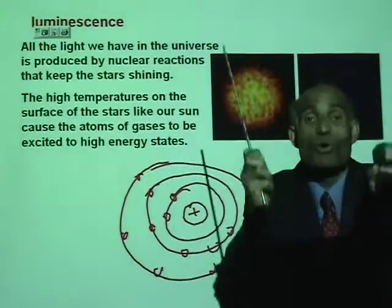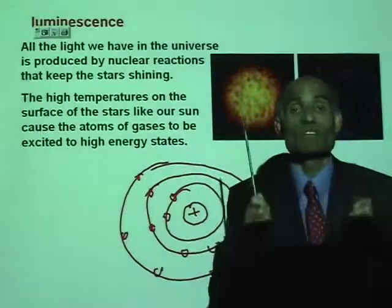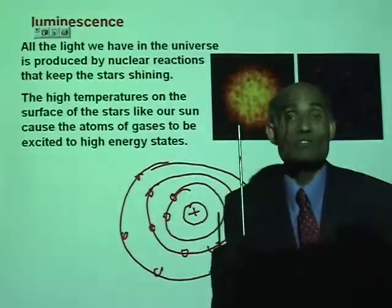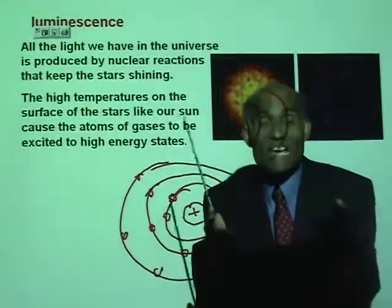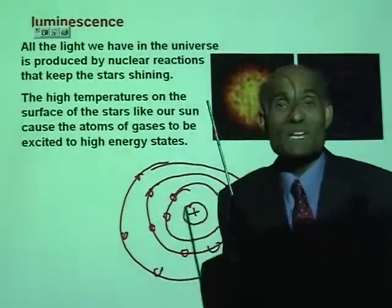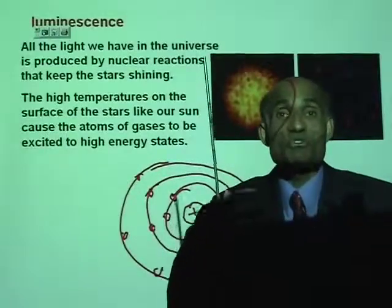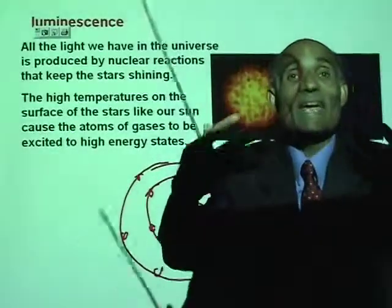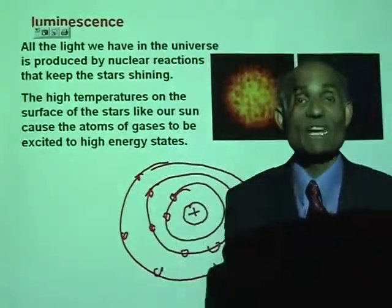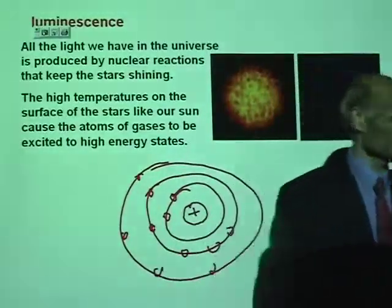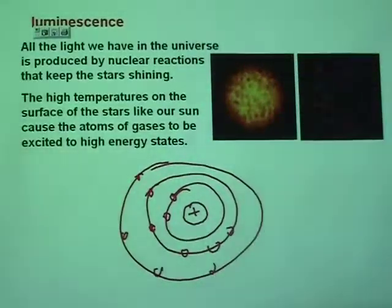When they come back, an electron sitting in the outer orbit has more energy than one in the inner orbit, so if it wants to go back to its normal position it has to throw away energy. Light that we see is the energy thrown away by electrons like this.